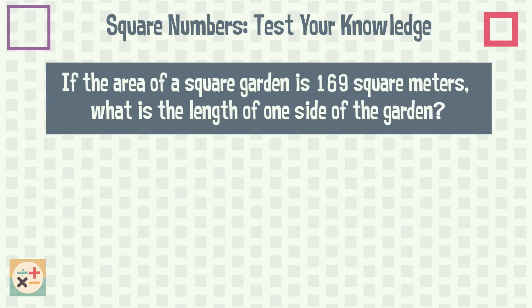Question 8. If the area of a square garden is 169 square meters, what is the length of one side of the garden?